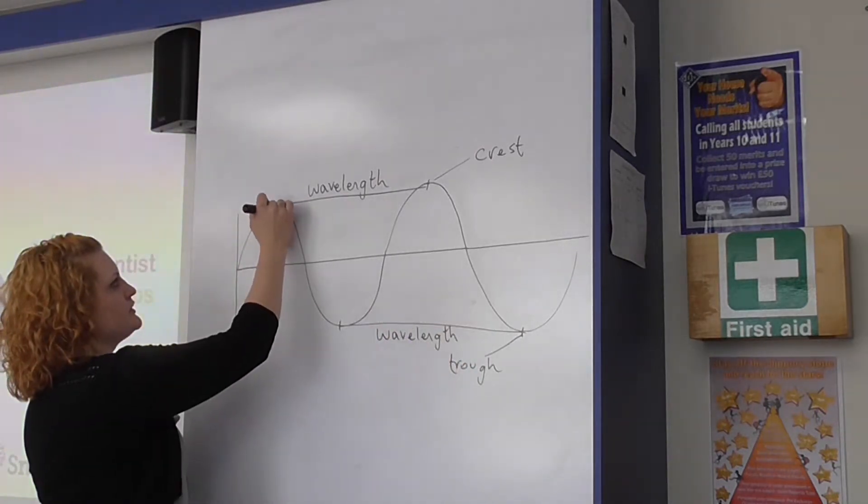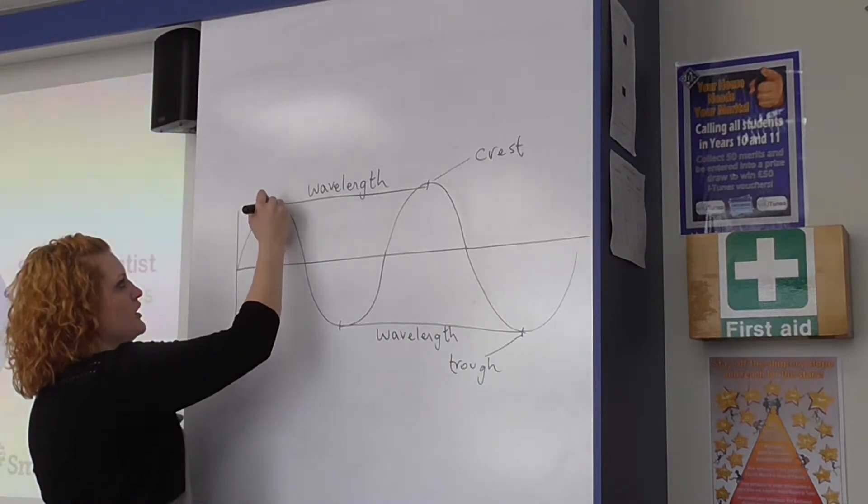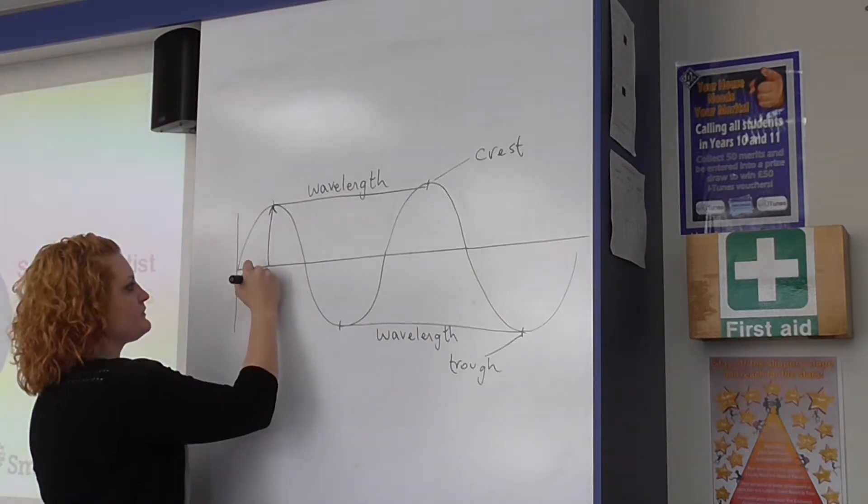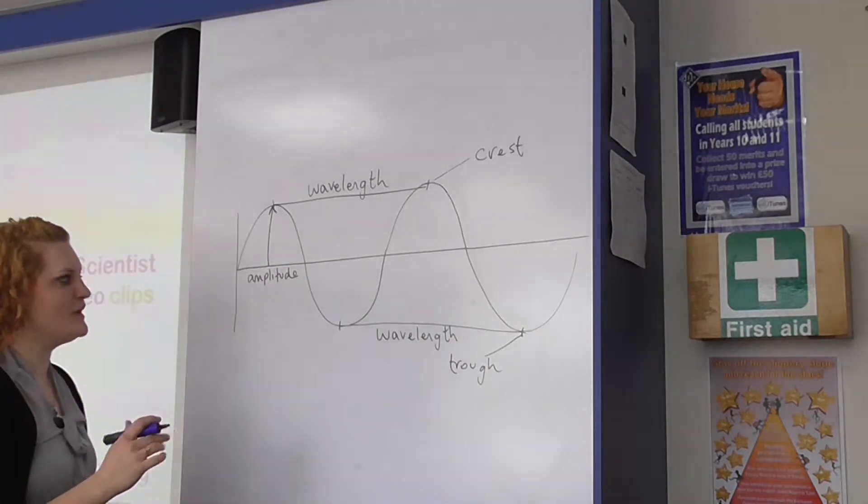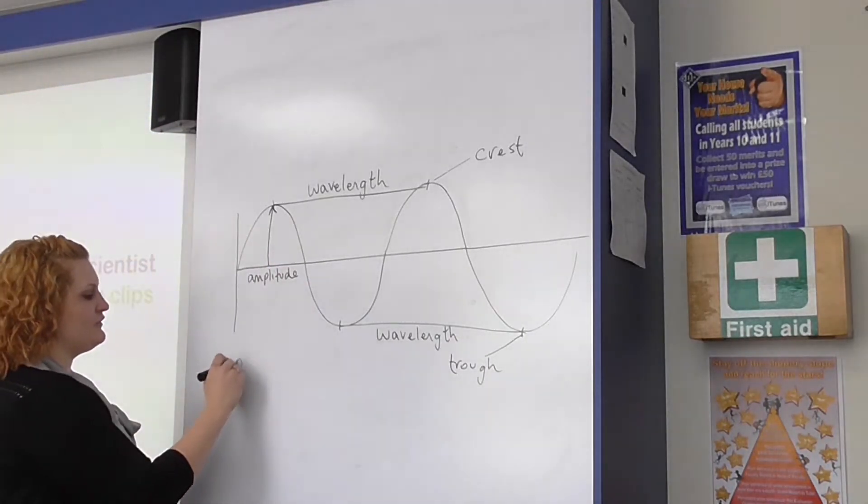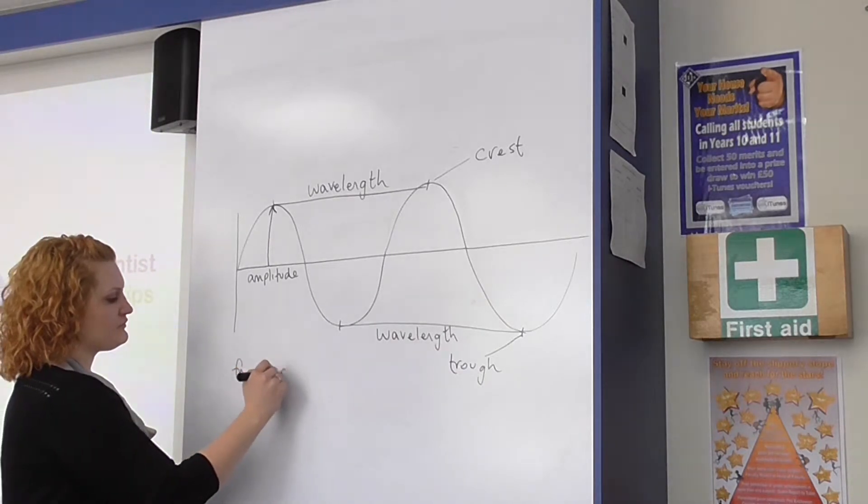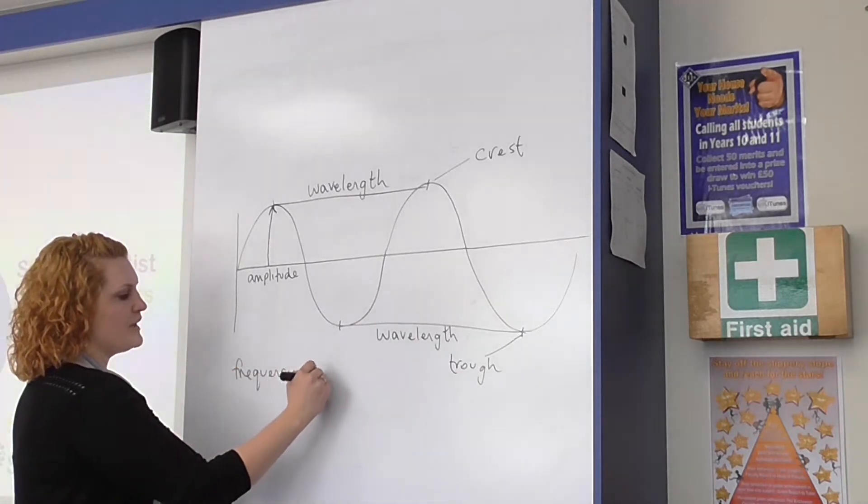They also need to be able to label an amplitude so going from the centre of the wave up to the crest. Additionally they need to be able to state that frequency is the number of waves per second.